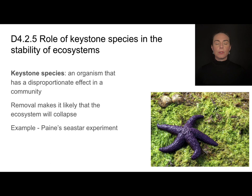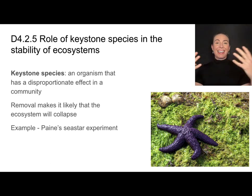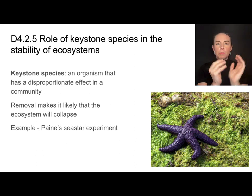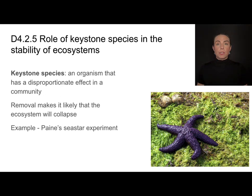One of the interesting factors to investigate in terms of ecosystem stability is the effect of keystone species. Keystone species are organisms that have a disproportionate effect in the community — when you remove them, the entire ecosystem may collapse. It's not just their population and those they feed on, not just those very immediate relationships that are affected; it's the entire ecosystem.